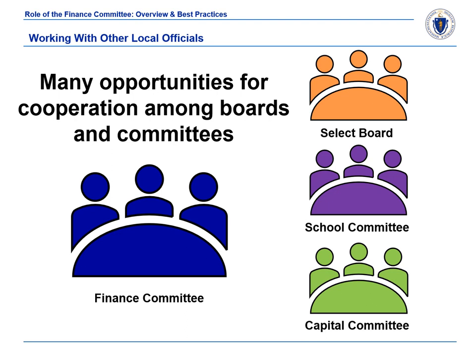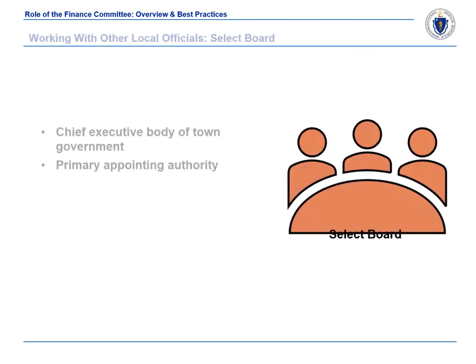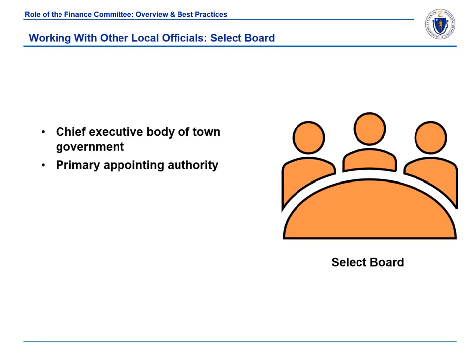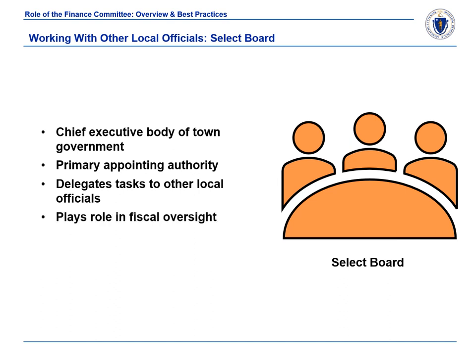There are many opportunities for cooperation between the select board and the finance committee. Before discussing the ways the two collaborate, let's briefly review the role of the select board. The select board, as the local chief executive body, has overall responsibility for the general operations of town government. Typically, the select board is the primary appointing authority for the town and delegates appropriate tasks and responsibilities to professional staff. The select board is often in charge of determining the best course of action for the town and plays an active role in the town's financial management. As such, the board often appoints local officials to carry out the fiscal management of the town. The select board should provide leadership and help to develop programs and policies as directed by town meeting.